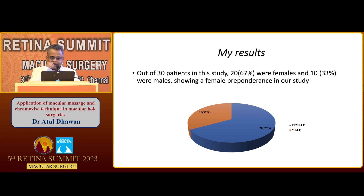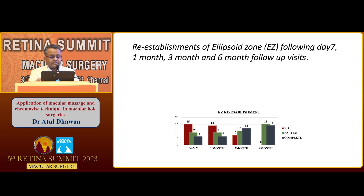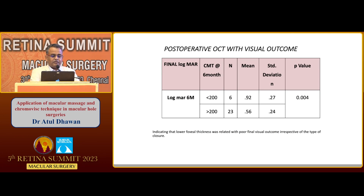We have done a study of 30 eyes — 29 eyes had hole closure. You can see re-establishment of ILM from day 7 to 6 months, going from no or partial to partial or complete. That means the hole is closing from inner to outer site. The same is happening in the ellipsoid zone, but less so. ELM closes first, then ILM closes in ILM flap surgery. We found that if the thickness of the fovea is more, the chances of vision improvement are greater.